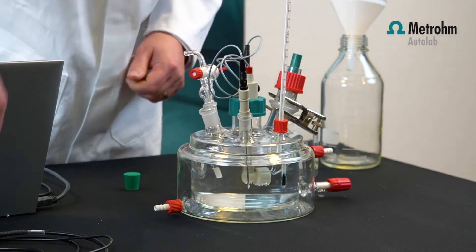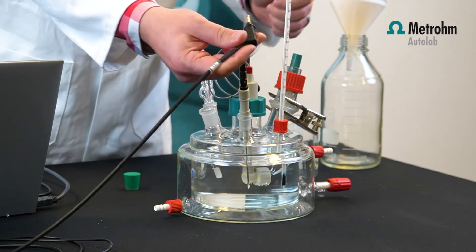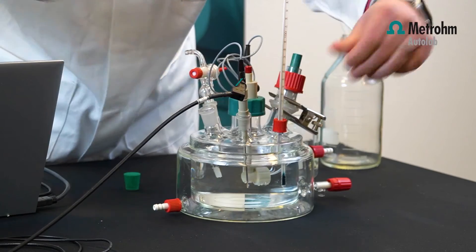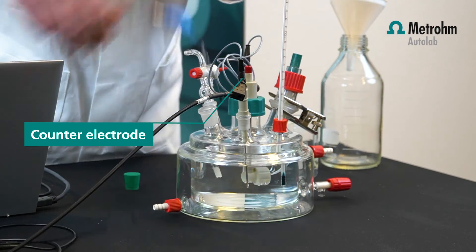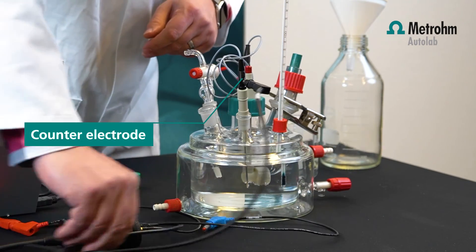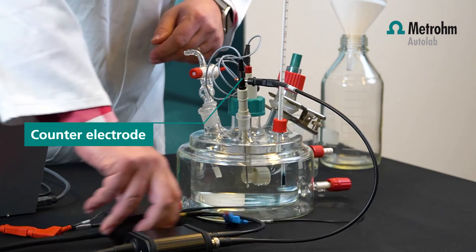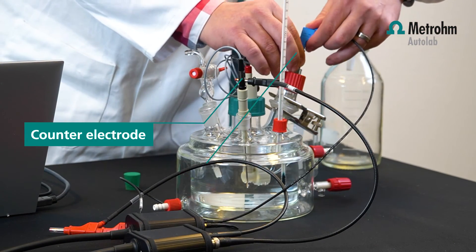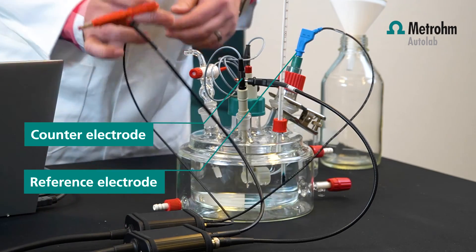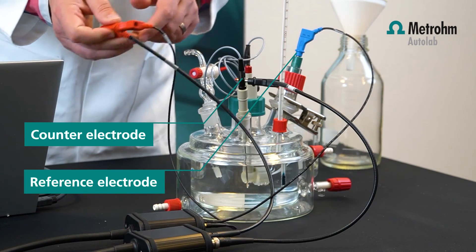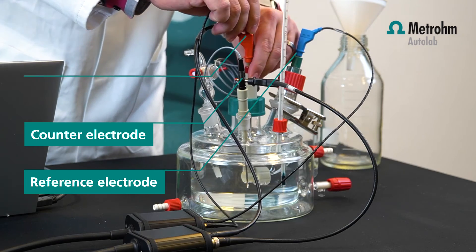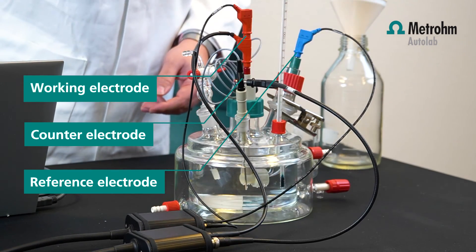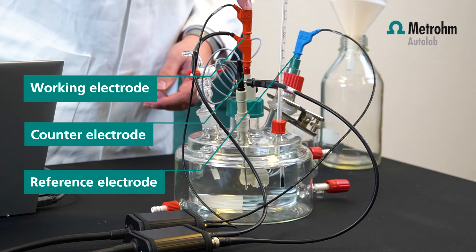Now the corrosion cell is filled. Put the reference electrode in the Luggin capillary. Now we connect the banana plugs, first to the counter electrode, then the reference electrode. Move the cables closer to the cell. The working electrode is in the middle. So you have your counter electrode, reference electrode, and the working electrode.